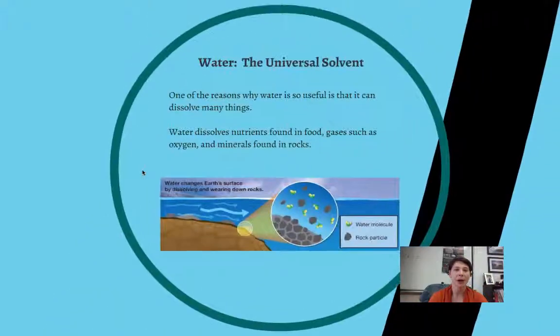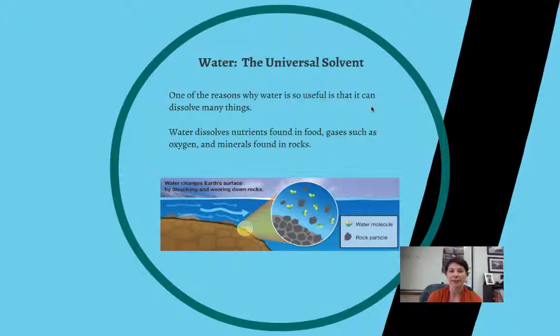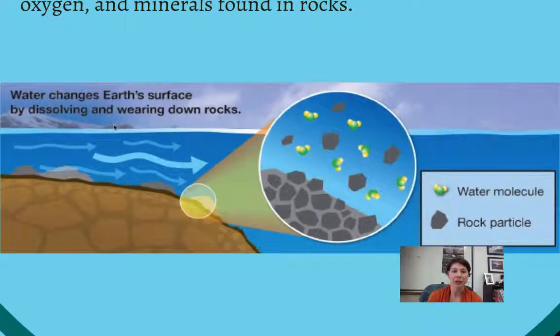And so one of the reasons why water is so useful is that it's called the universal solvent. And what it's called that is because it can dissolve so many different things. So water can dissolve nutrients in food. It can dissolve gases like oxygen or carbon dioxide. And also it can dissolve minerals found in rocks. So water can actually change Earth's surface by dissolving and wearing down rocks. So that's what we see here. We have these water molecules that are basically dissolving the minerals in this rock.